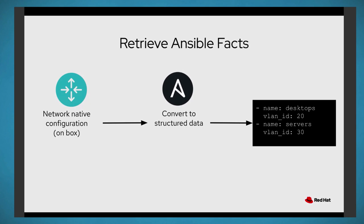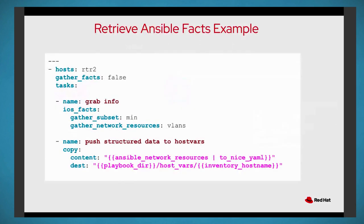You could create a template or markdown file or HTML file from this data. The playbooks are extremely simple. Here I'm showing ios_facts with two new parameters launched around Ansible Fest last fall: gather_subset: min, which creates backwards compatibility with existing facts, and the new gather_network_resources parameter. I put vlans to grab those VLANs, but I could just put all — and all will grab all existing resource module structured data and push it to a file. The second task pushes it into a flat file, which could go into a CMDB or directly into Git.